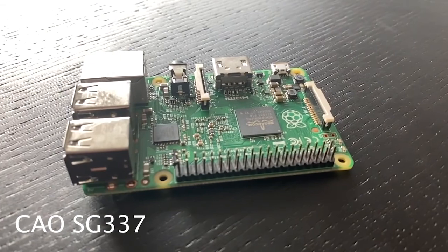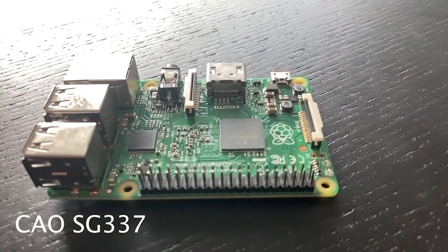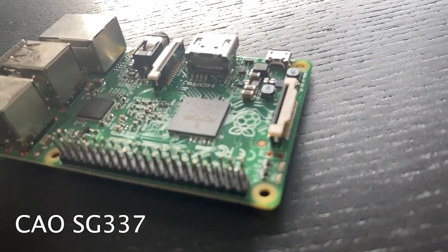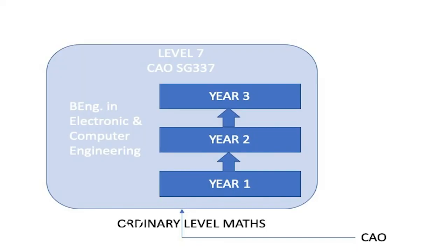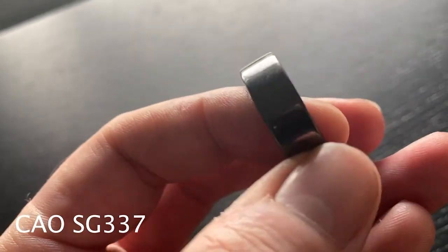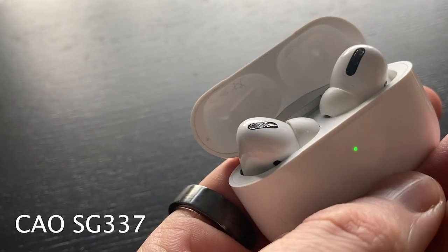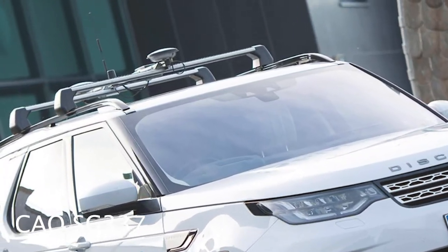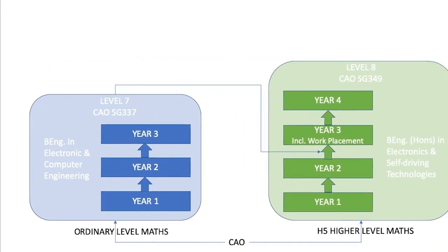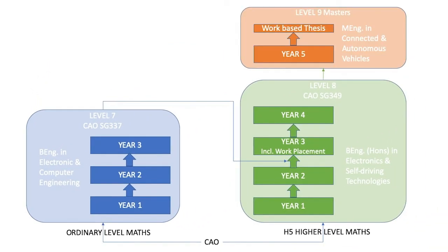If you are interested in technology or engineering, but are not doing higher level maths, why not consider our level seven in electronic and computer engineering? This is a three-year program that looks at the design and development of embedded electronic systems. These are the medical devices that keeps us healthy, the consumer devices that keeps us entertained, or the controlled systems that keeps us safe on the road. You can then progress onto the level eight in electronics and self-driving technologies, and from there to the masters. Check out the link below for more information.